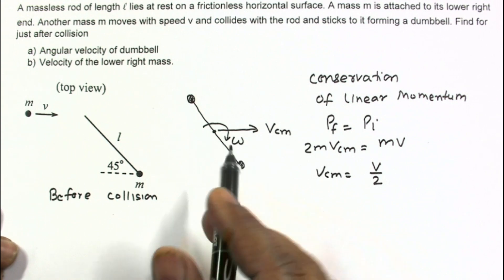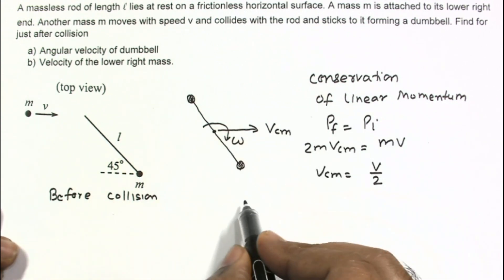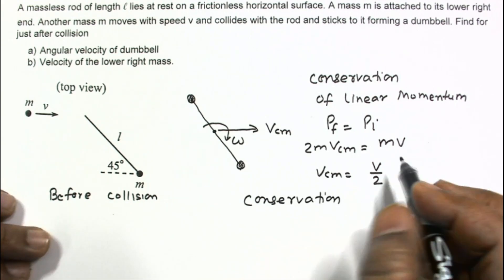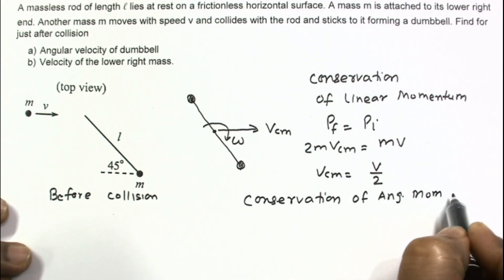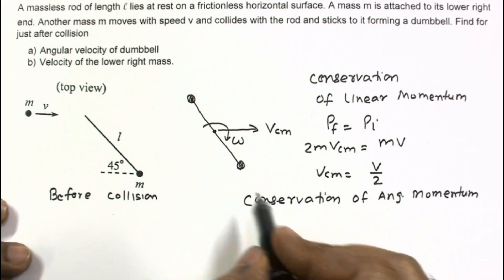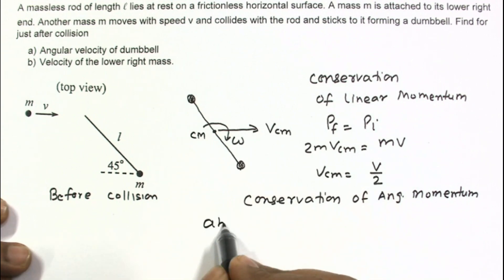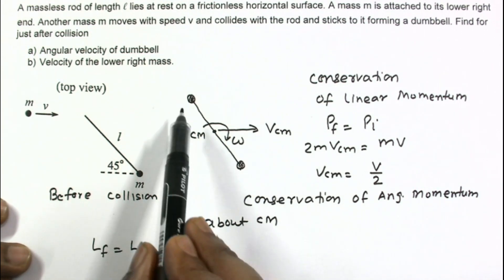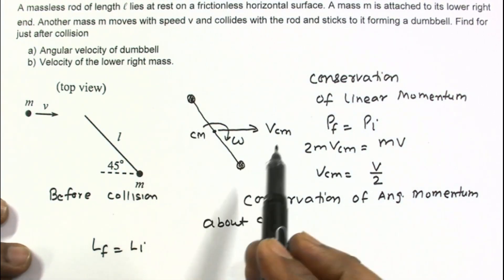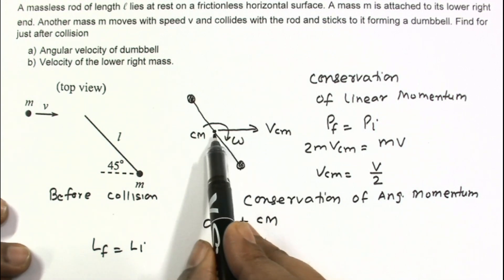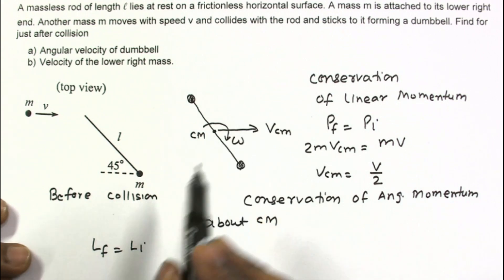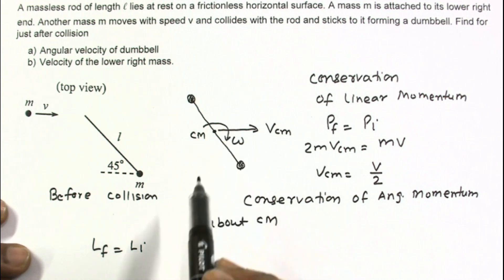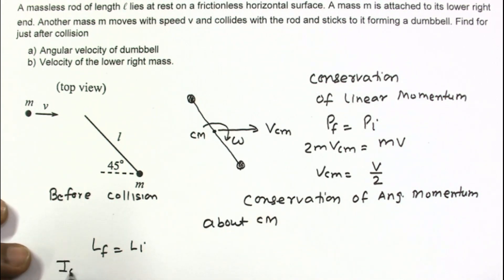Now for omega. Since there is no external impulse, we can also apply conservation of angular momentum about the center of mass. L_final equals L_initial. Since the motion just after collision is combined translation and rotation, I add rotational and translational angular momentum. The translational angular momentum about the center of mass is zero because VCM passes through that point, so L_final = ICM · omega.